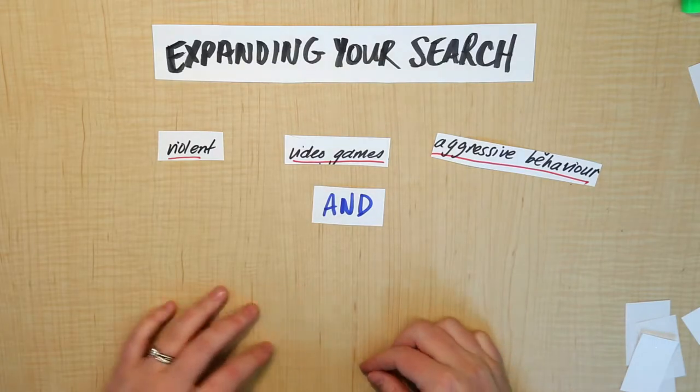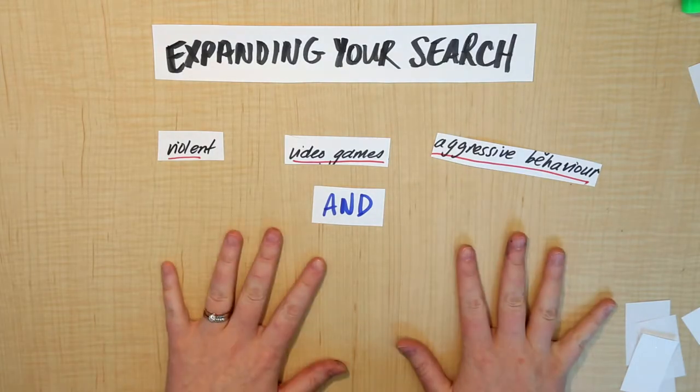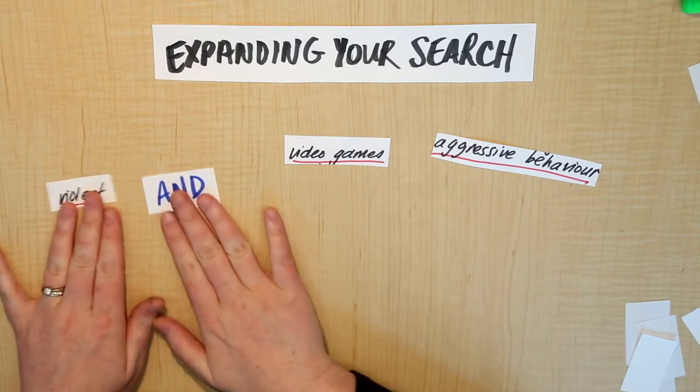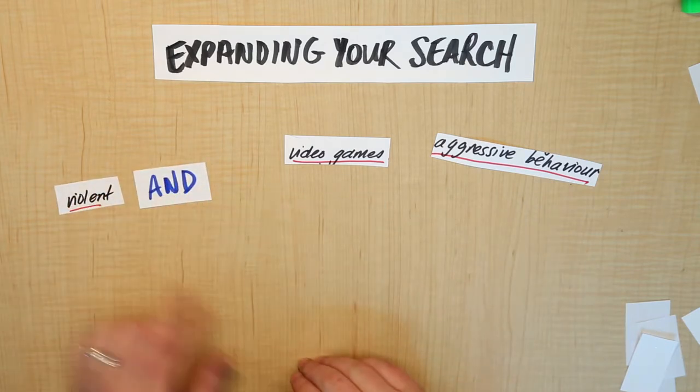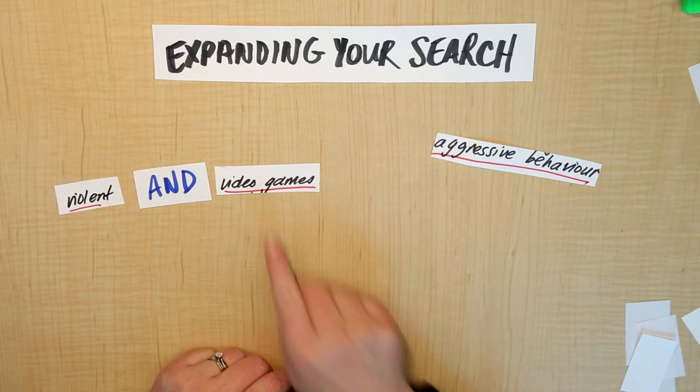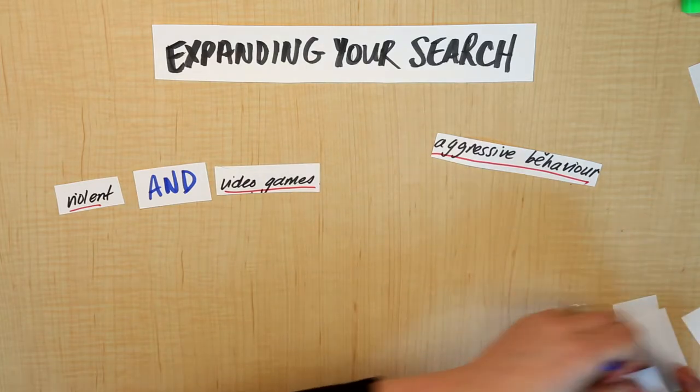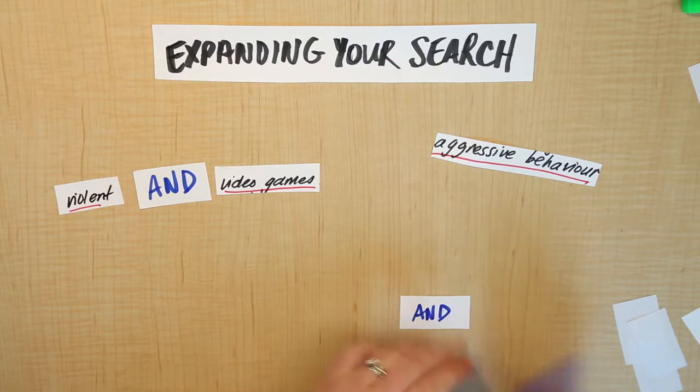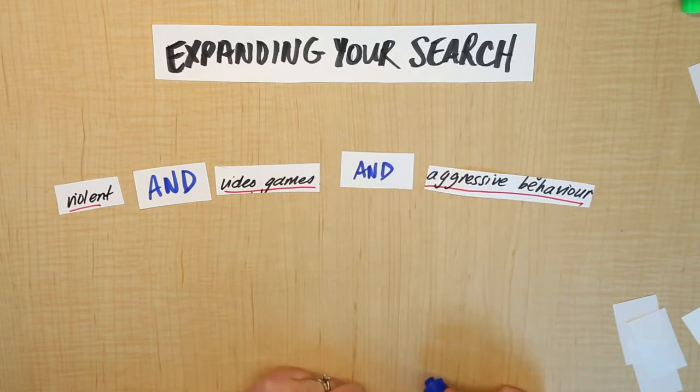When we go ahead and put these into the database, what we want to say is that we need all three of these words. So we need violent to be in the results we get, and we also need video games to be present, and we also need the phrase aggressive behavior to be present.